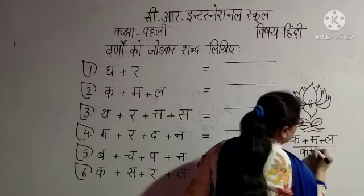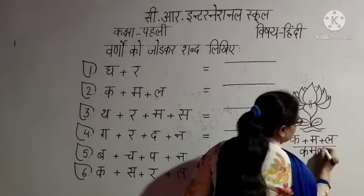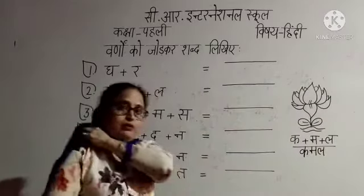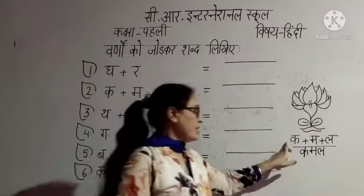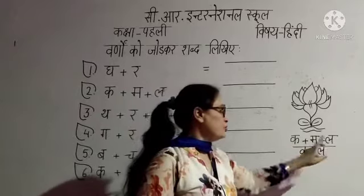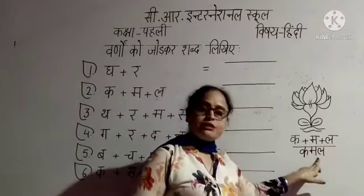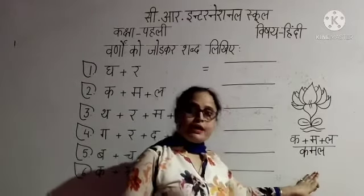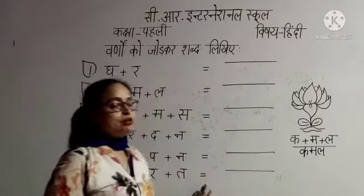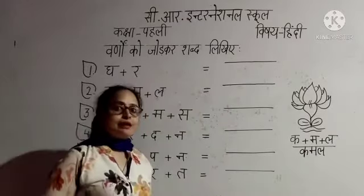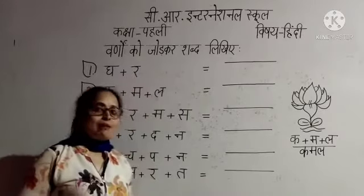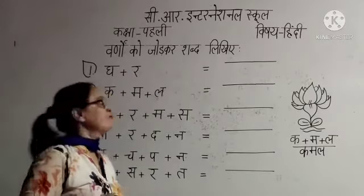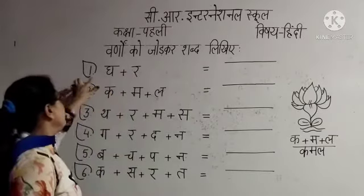Ka, ma, la — क्या बनता है? कमल। ठीक है? इन सब वर्णों को जोड़कर क्या बनता है? कमल। ऐसे ही जोड़कर यह लिखना है। चलो, ma'am के साथ इस चित्र को आप भी करो — one number पर क्या है?